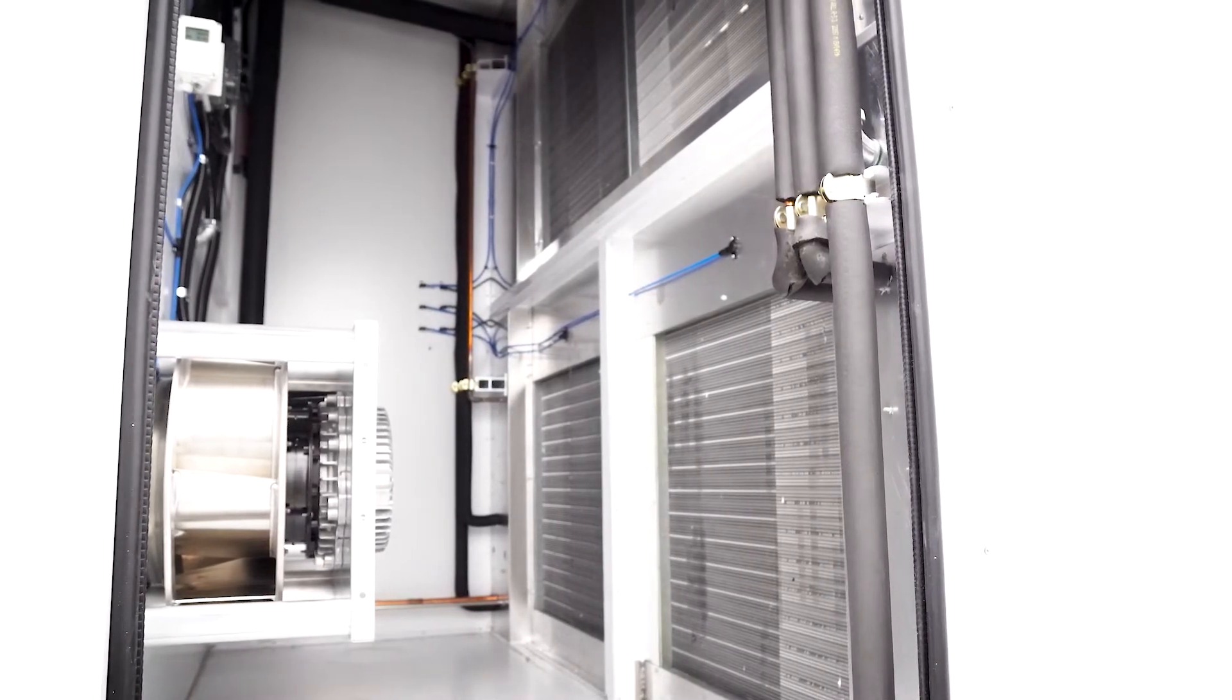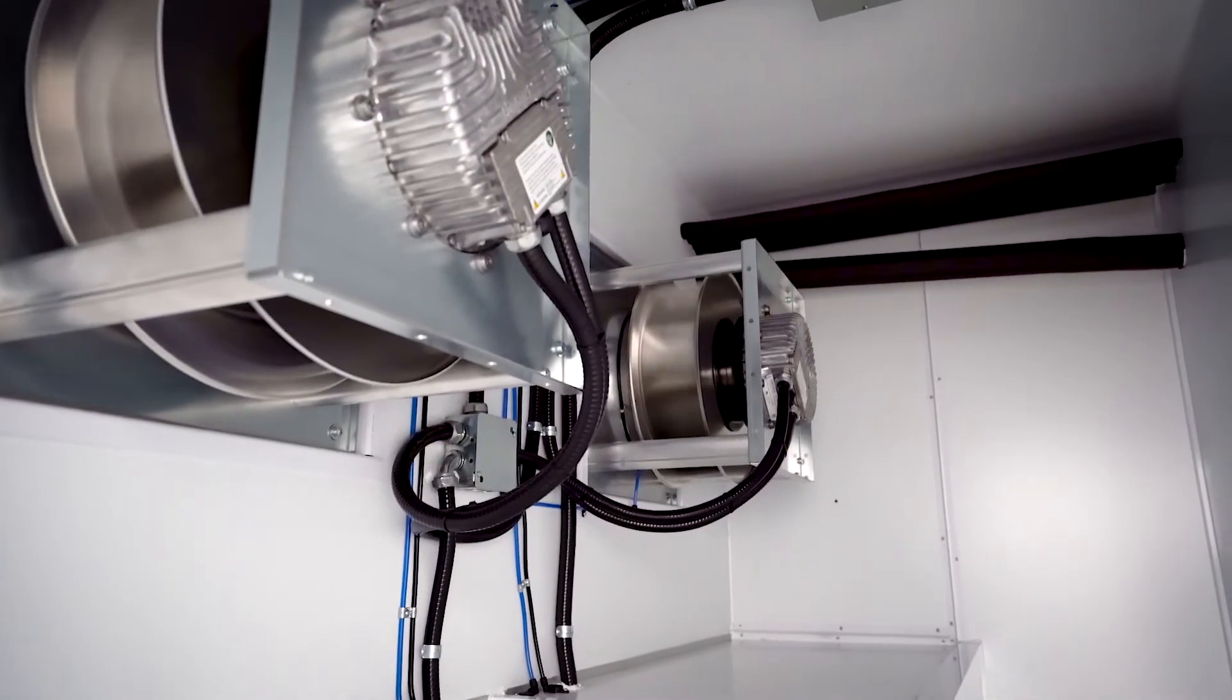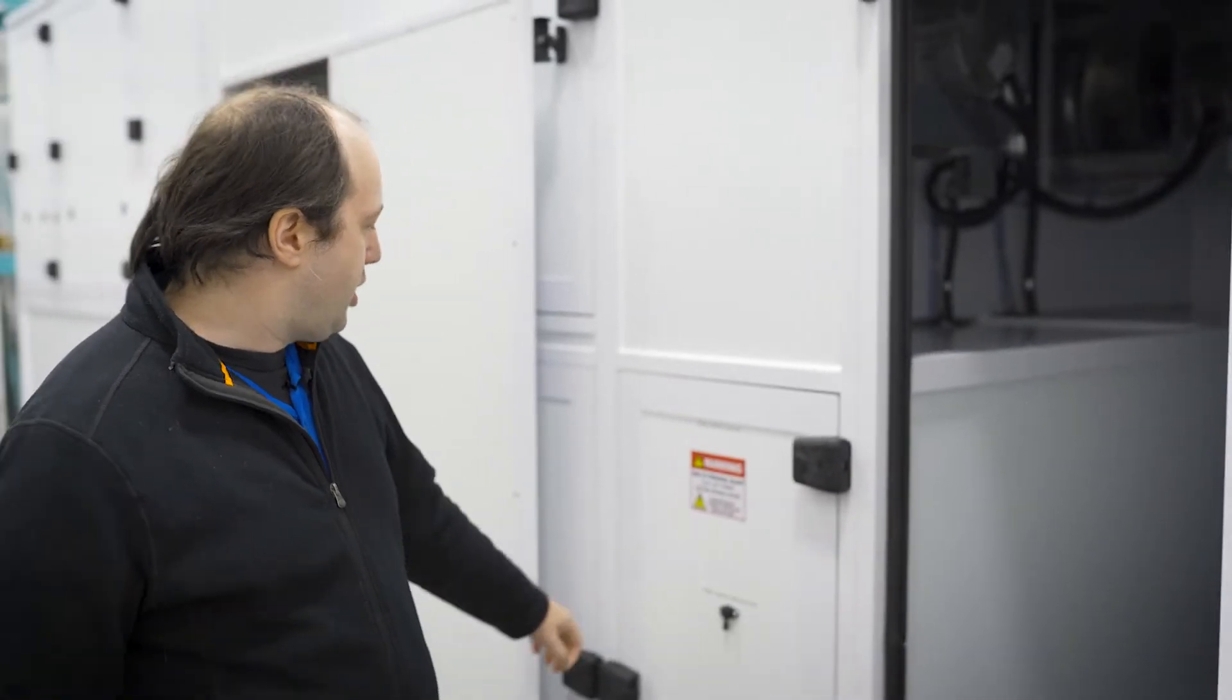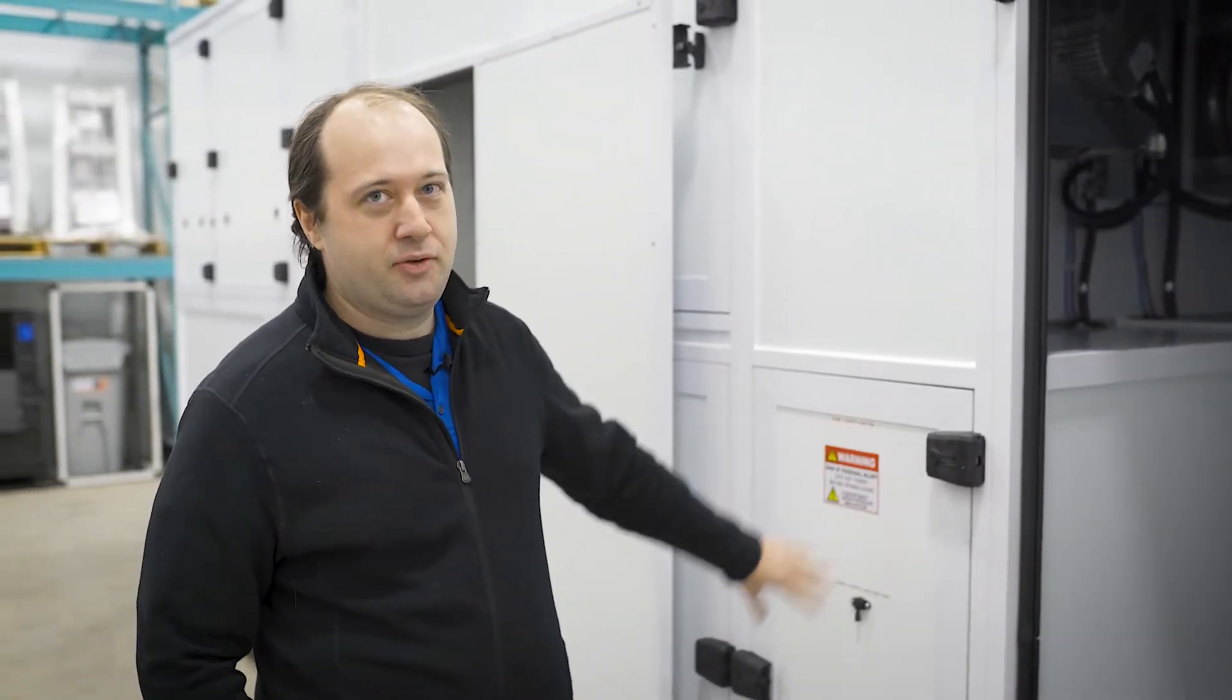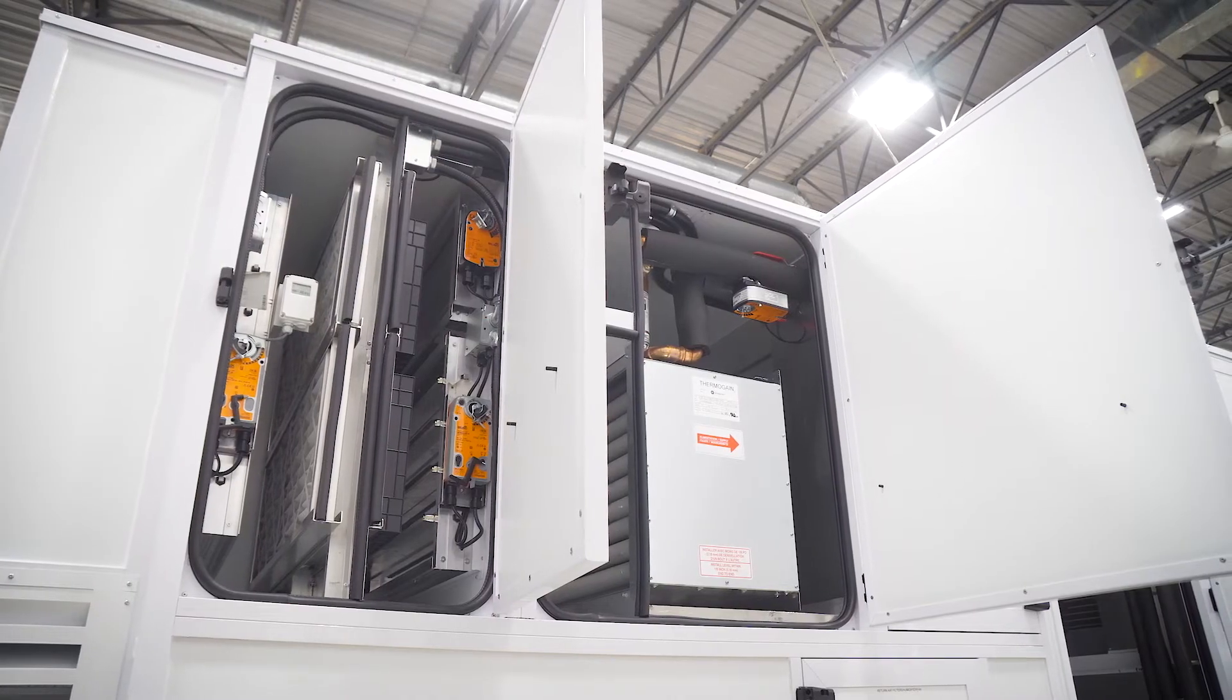In here we can see the two supply fans for zone three. Their opening will be in the floor so they'll go through the roof once it's installed. And then in here are the supply fans for zone one and zone two on the opposite side, also going through the floors.